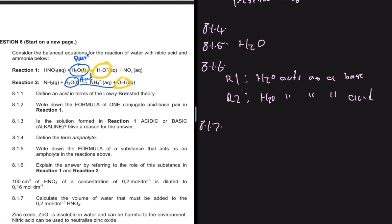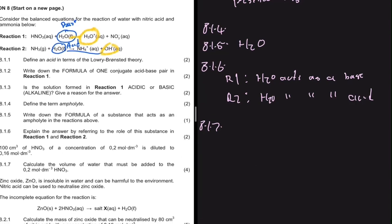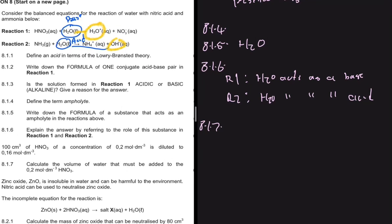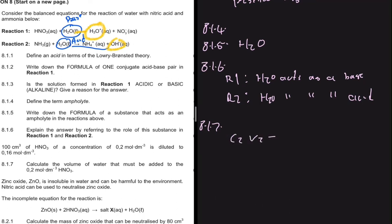Now the equation for 8.1.7 — it's not too difficult, but there's a mistake many people would make. It says 100 cm³ of HNO3 at a concentration of 0.2 mol/dm³ is diluted to 0.16 mol/dm³; calculate the volume of water that must be added. The formula we can use is: C2 × V2 = C1 × V1.